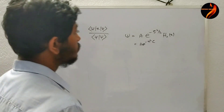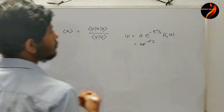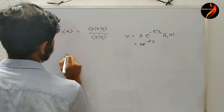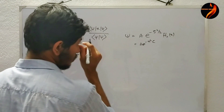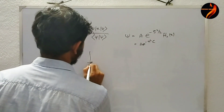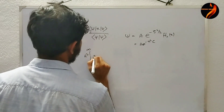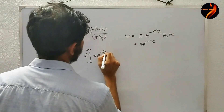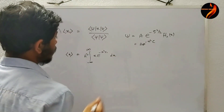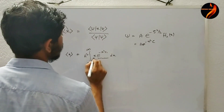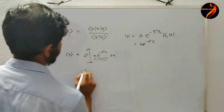They then asked me to calculate the expectation value of position in the ground state. Given the ground state wave function, I needed to evaluate the integral from minus infinity to plus infinity of psi-squared times x times e^(minus xi^2) dx. Since psi-squared is an even function and x is an odd function, the whole integrand is an odd function. The integral of an odd function from minus infinity to plus infinity gives zero.